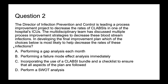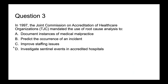Question two: the director of infection prevention and control is leading a process improvement project to decrease the rates of CLABSIs in one of the hospital ICUs. The multidisciplinary team has discussed multiple process improvement strategies. In developing the final improvement plan, which choice is most likely to help decrease the rates of these infections? A — performing a gap analysis each month. B — performing a failure mode effect analysis immediately. C — incorporating the use of a CLABSI bundle in a checklist to ensure that all aspects of the plan are followed. Or D — perform a SWOT analysis. A lot of you put C — correct. In 1997, the Joint Commission mandated the use of root cause analysis to investigate sentinel events in accredited hospitals — that's D, and they always ask about root cause analysis and sentinel events.